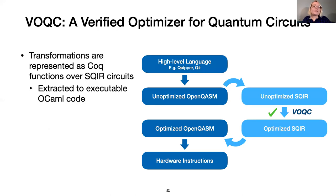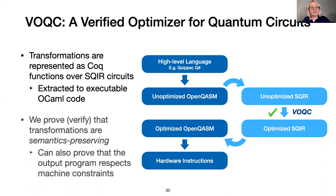Our primary purpose for developing SQUIRE was to have a suitable intermediate representation for VOQC, our verified optimizer for quantum circuits. VOQC optimizations are Coq functions over SQUIRE circuits, which are later extracted to OCaml. We prove that all optimizations are semantics-preserving, and in some cases we prove additional properties that say that the output program satisfies some machine constraints.